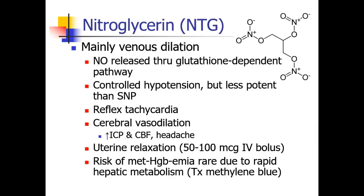The first drug we'll discuss is nitroglycerin. As you can see, nitroglycerin has three groups that can release nitric oxide, and through a glutathione-dependent pathway, this drug is metabolized into nitric oxide.